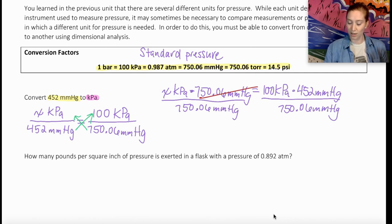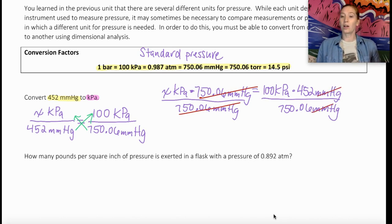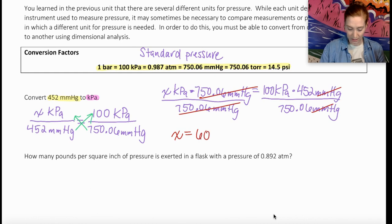This is just a refresher. We already know how to do these conversions with this method. Just showing you another example. So now I want to go ahead and do the math. I like to do mine all at once. So I'm going to take 100 times 452 divided by 750.06. Now when I do this in my calculator, I'm going to get X equals 60.261 and something, something, something kilopascals.